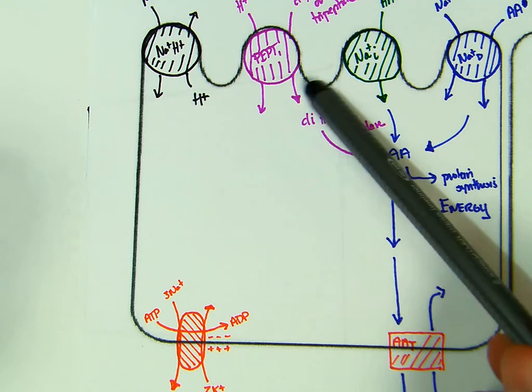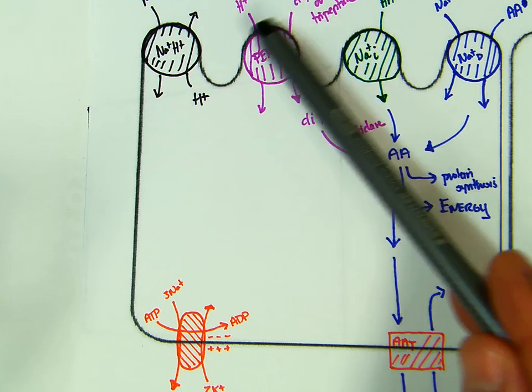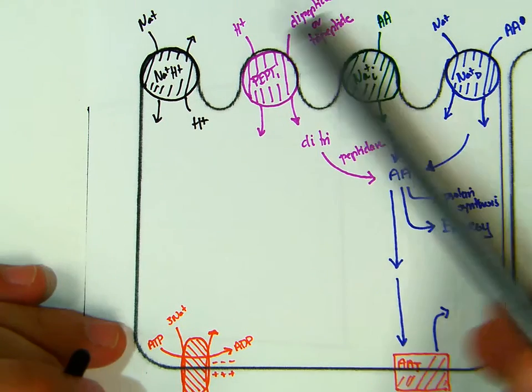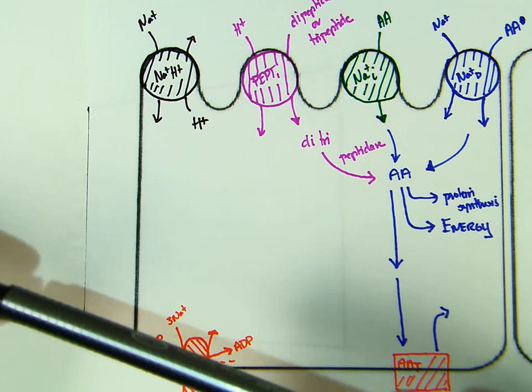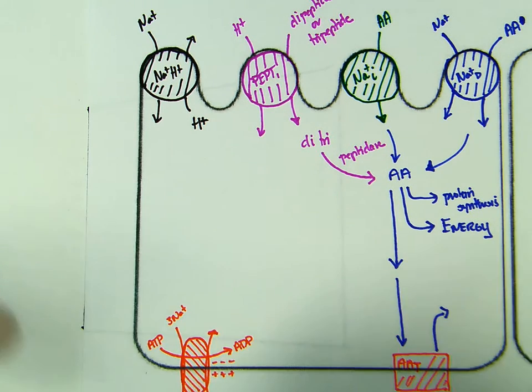There's only one PEPT-1 that I'm aware of, and it's going to transport the dipeptides and tripeptides. And then we have over here the sodium-proton exchanger. And again, that sodium-proton exchanger is going to decrease or diminish the electrochemical gradient created down here by our favorite little transporter, the sodium-potassium pump.